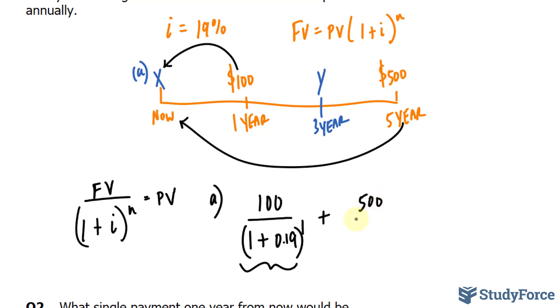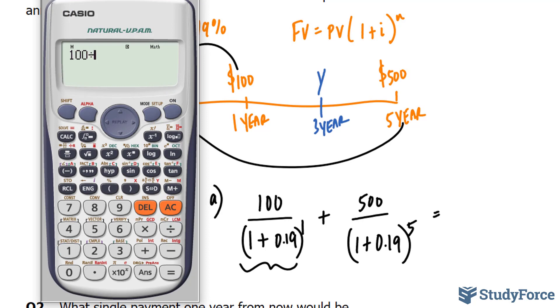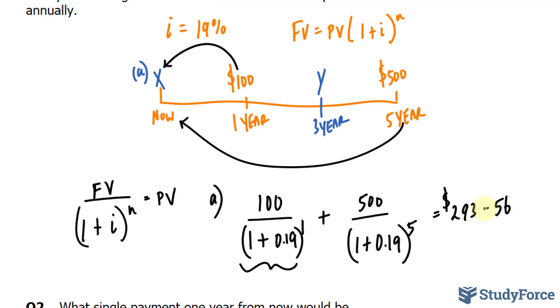So again, the future value is 500, 1 plus 0.19. Now to discount this back to the present, that means 5 periods. Because from 5 to now, that's 5 years. Summing this up will give us the total single payment that would consolidate these two future payments. Now using our calculator, 100 divided by 1 plus 0.19 to the power of 1 plus 500 divided by 1 plus 0.19 raised to the power of 5. By adding these together, we end up with $293.56. So that is the equivalent value of these two debts being consolidated in a single payment today.